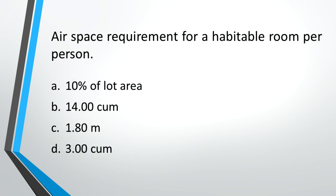Air space requirement for a habitable room per person. A: 10% of lot area, B: 14 cubic meters, C: 1.8 meters, D: 3 cubic meters. Answer: B, 14 cubic meters.